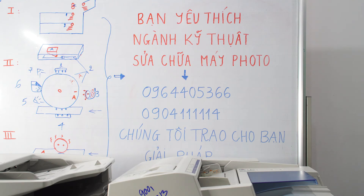Khi nguồn điện không ổn định, máy cũng sẽ ngưng và báo lỗi trên màn hình — đó là những mã lỗi đơn giản. Còn những mã lỗi cụ thể là những hư hỏng cụ thể của phần cấu tạo cơ khí, nguyên lý hoạt động, hay những vật tư linh kiện đã hư hỏng, đã hao mòn cần phải tiến hành thay thế và sửa chữa.